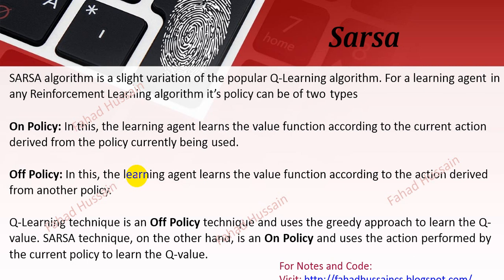Q-learning is off-policy because the next action that our agent takes is based on a different policy — it uses a greedy approach where the probability of the maximum value is chosen. SARSA, on the other hand, is an on-policy technique and uses the action performed by the current policy to learn the Q-value. The current policy's learned values are used directly in SARSA, whereas Q-learning follows an off-policy.